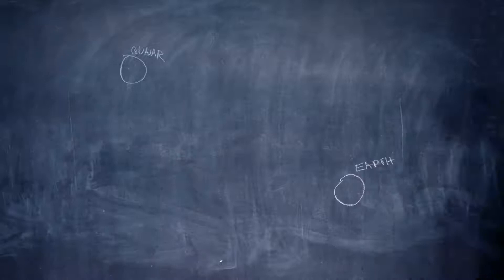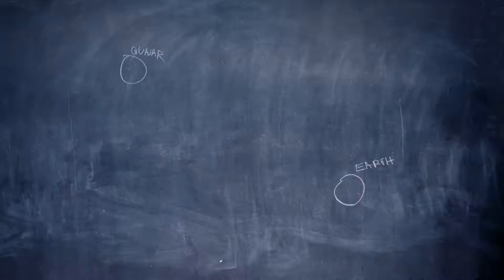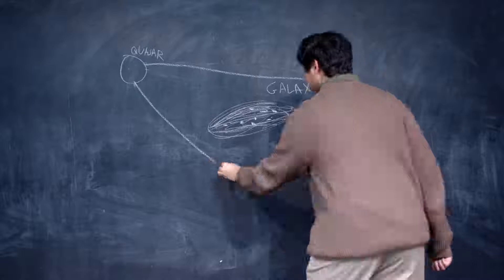Gravitational lensing happens when the light from quasars is distorted by the gravity of massive galaxies. This can make a single quasar look like multiple light sources instead of just one.